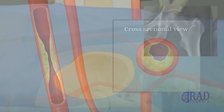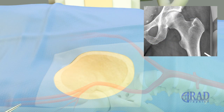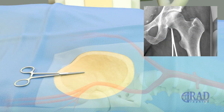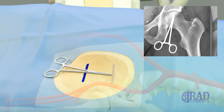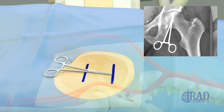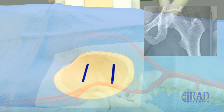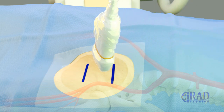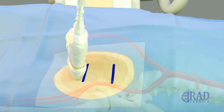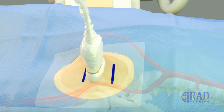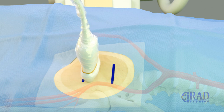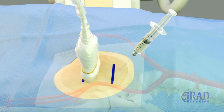First, the skin in the ipsilateral groin area is marked based on the upper and lower margins of the femoral head. Once the ideal location of the common femoral artery for access is identified under ultrasound, the skin entry site is numbed by injecting lidocaine.